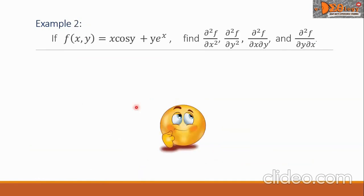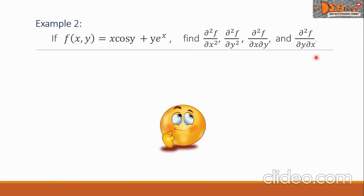Now example 2. If f of x, y equals x cosine y plus y times e raised to x, find these four second order partial derivatives.